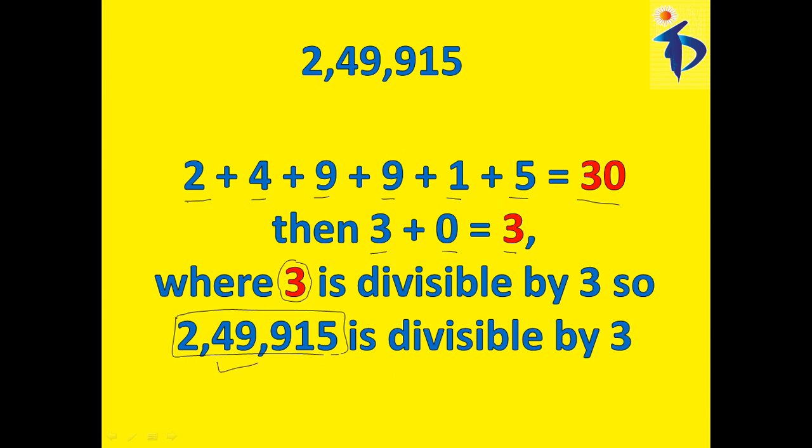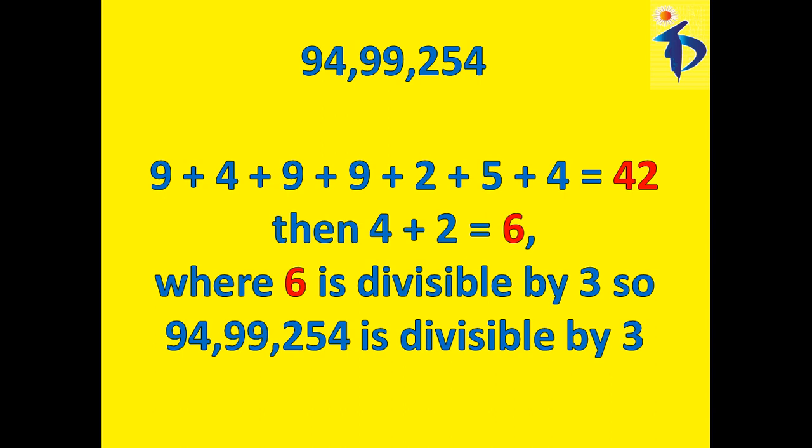Let us go with another example. Now this is the number 94,99,254. Here again I took the digits of the given number. The digits are 9, 4, 9, 9, 2, 5, 4, and if you add all the digits you get 42. Then sum of the digits again, that is 4 and 2, is equal to 6. So 6 is divisible by 3 because we know that 6 is a multiple of 3. So I can say very confidently that the number 94,99,254 is also divisible by 3.